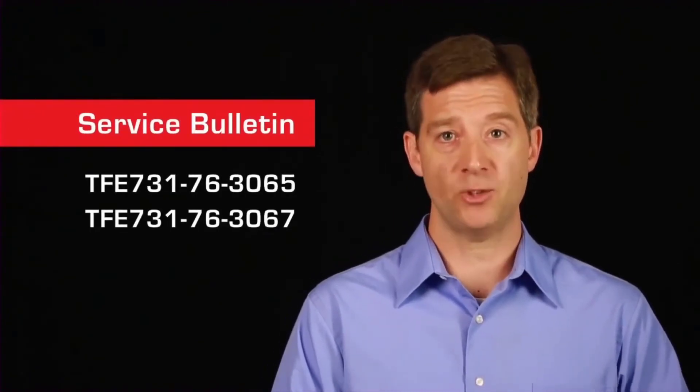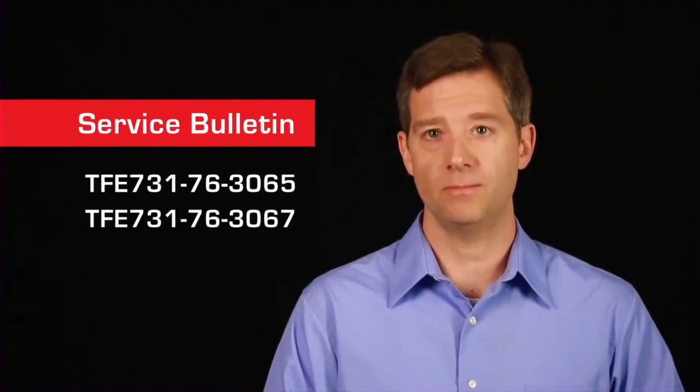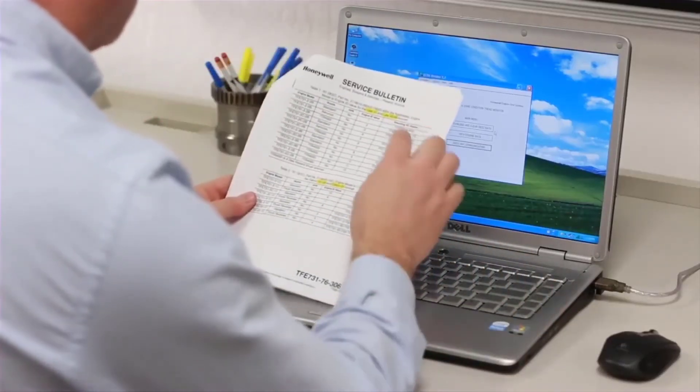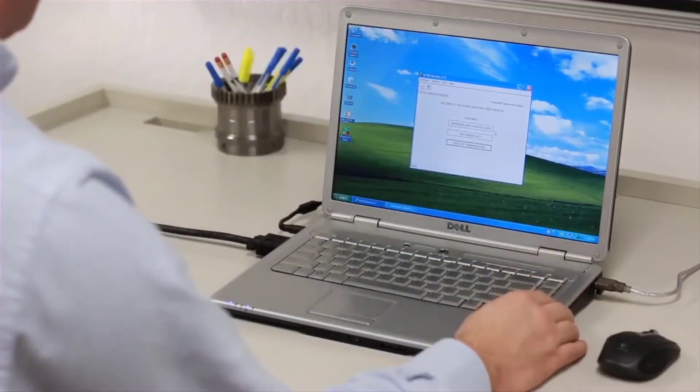First, enter the initialization information, then perform an initial download. Refer to Service Bulletin 76-3065 for-4 and-5 engines or 76-3067 for-2 and-3 engines. The Service Bulletin contains a worksheet that should be filled out. This worksheet will be used to input the required information for DEEC initialization.